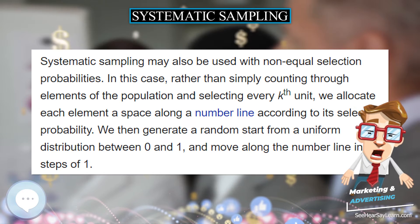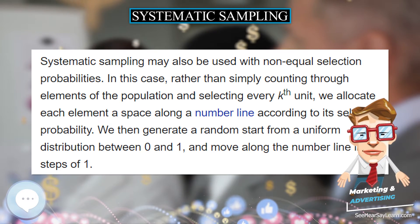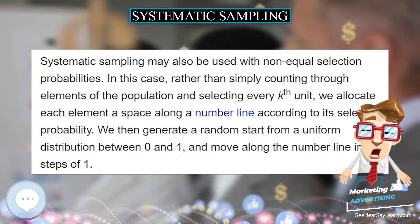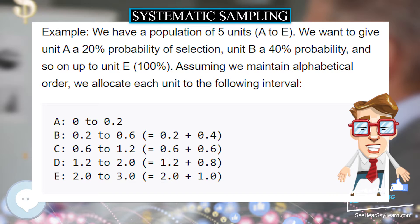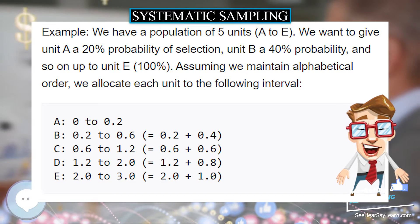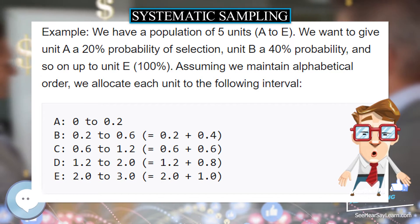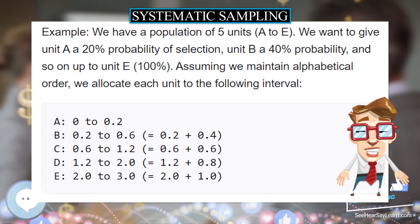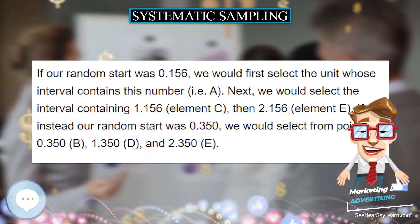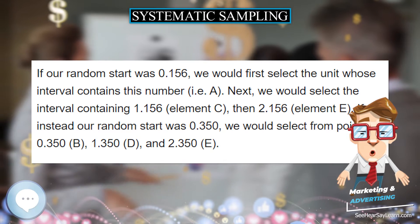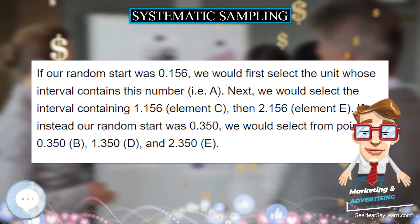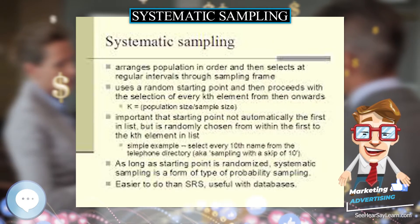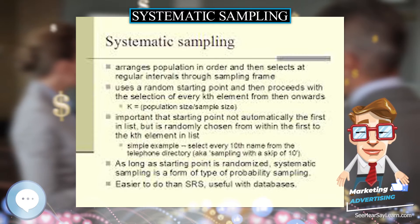For example, suppose a supermarket wants to study buying habits of their customers. Using systematic sampling, they can choose every 10th or 15th customer entering the supermarket and conduct the study on this sample. This is random sampling with a system.